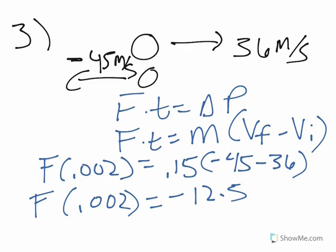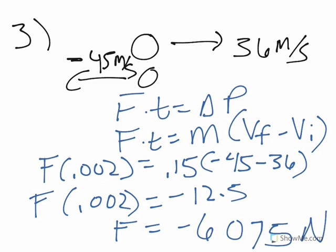Dividing by 0.002, we get negative 6075 newtons. If you had made the 36 negative instead, you would have gotten positive 6075, and there's nothing wrong with that. It just means we defined left as negative, so the force is negative because it's going to the left.